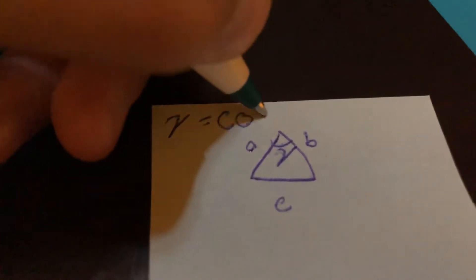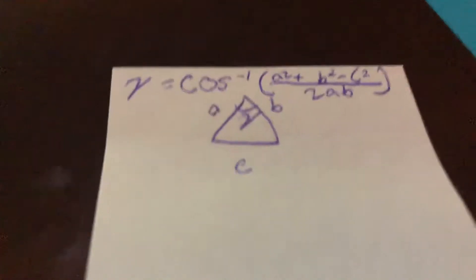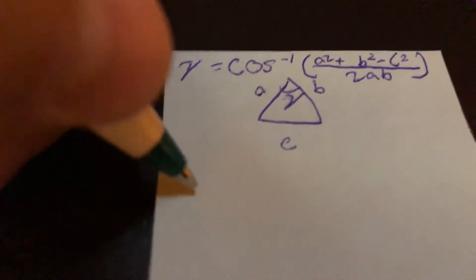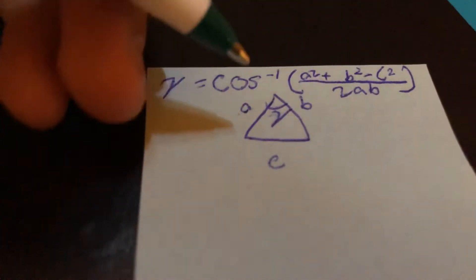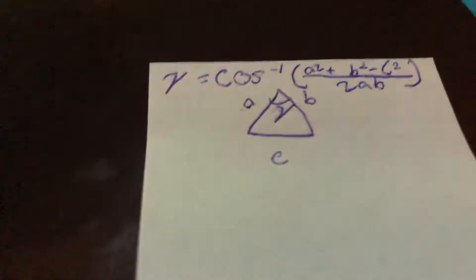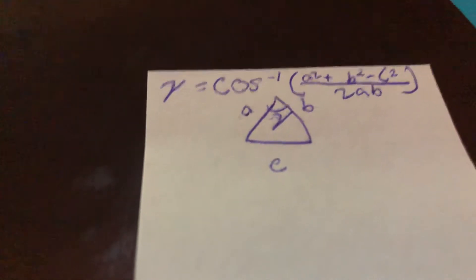Gamma equals cosine inverse, and then we're going to take the quantity a squared plus b squared minus c squared—don't forget that minus is in there before the c squared—over 2ab. That is all we'll have to do. So what this is saying is that if we know all three of these side lengths, we can find this angle length.